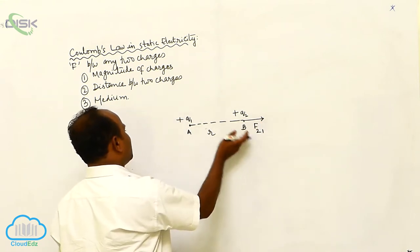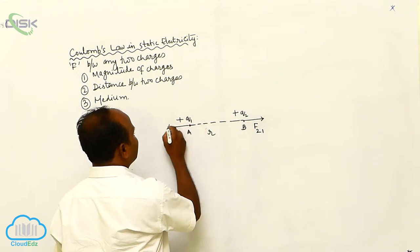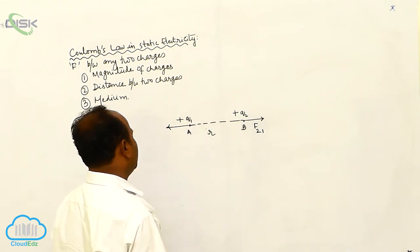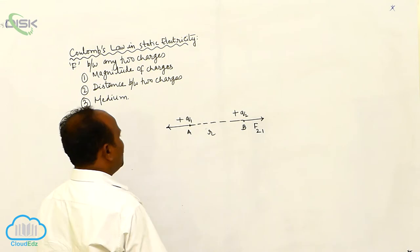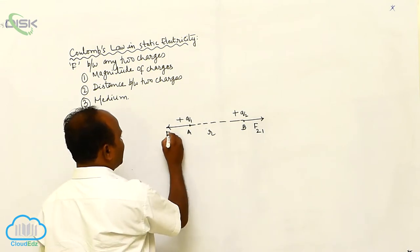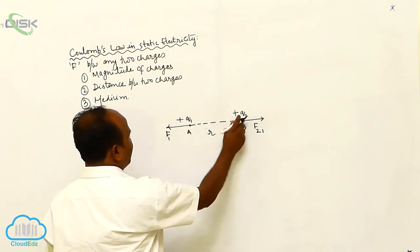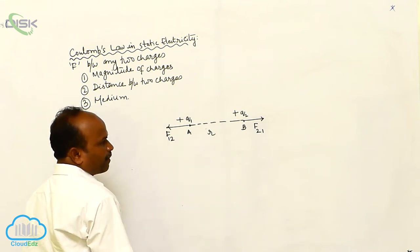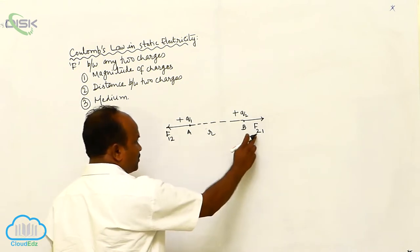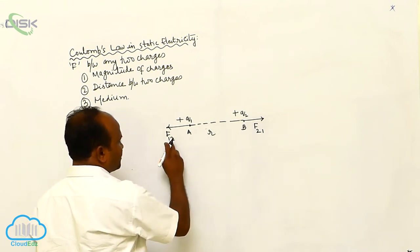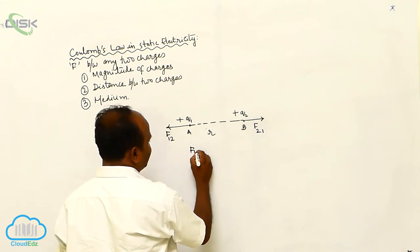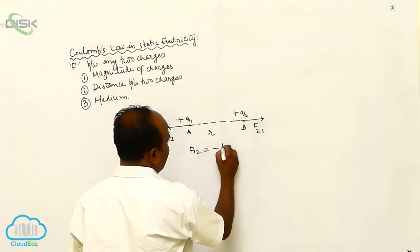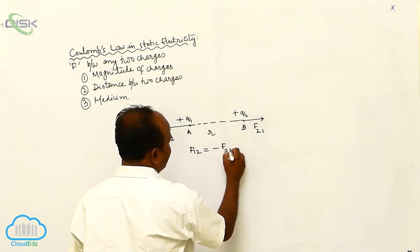Q2 also repels the first charge Q1. The force on the first charge by Q2 is equal and opposite to the force on the second charge by Q1. That is, F₁₂ is equal and opposite to F₂₁.